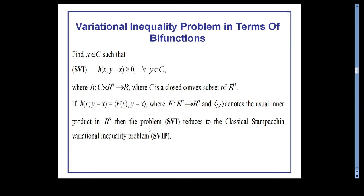We now come to the main topic: variational inequality problems in terms of bifunction. This is defined as finding a vector x in C such that h(x, y − x) ≥ 0 for all y belonging to C, where h is a mapping from C × R^n to R̄. Here R̄ is R union {±∞} and C is a closed convex subset of R^n. If we take h(x, y − x) to be the inner product F(x) · (y − x), the bifunction VIP reduces to the standard VIP.